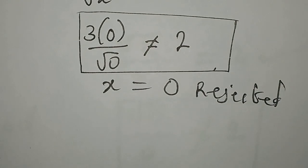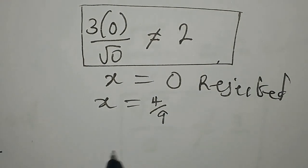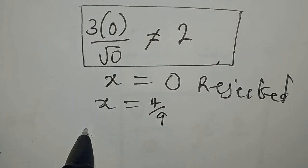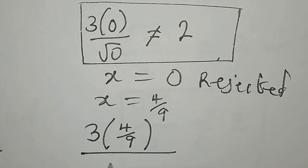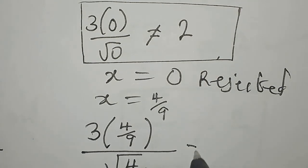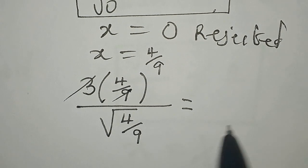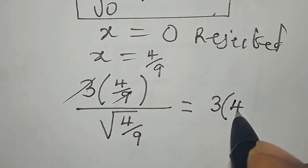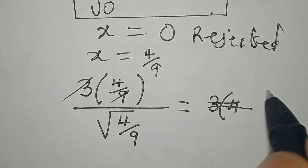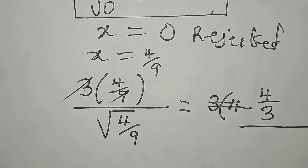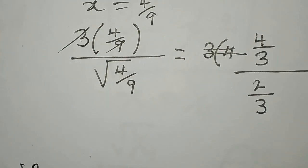The next value is x equals 4 over 9. Substituting: 3 multiplied by 4 over 9, divided by square root of 4 over 9. The 3 cancels with the 9 to give 3 multiplied by 4, and after cancellation we have 4 over 3. We are dividing by the square root of 4 over 9, which is 2 over 3, since square root of 4 is 2 and square root of 9 is 3.